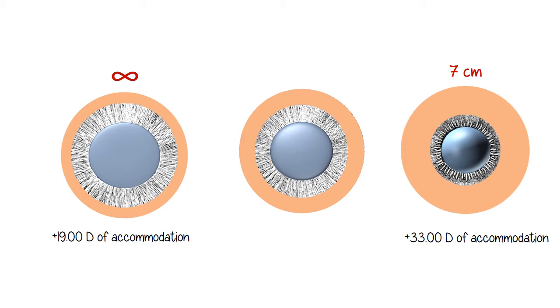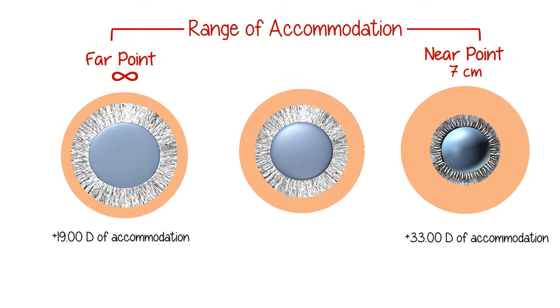Assuming that this person sees clearly at infinity and at seven centimeters, infinity is the far point, and seven centimeters is the near point. And the distance from one to the other is called the range of accommodation.